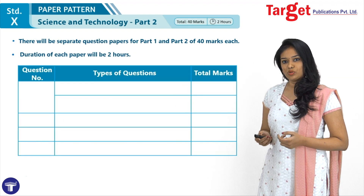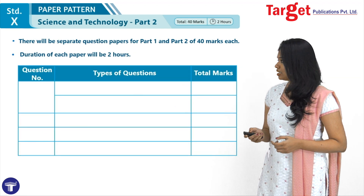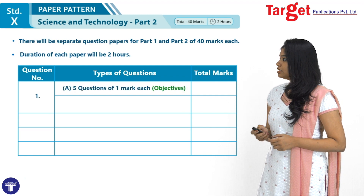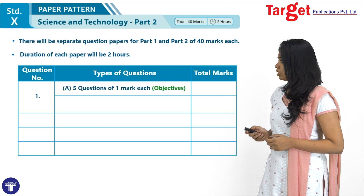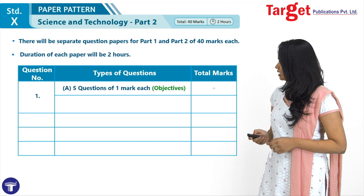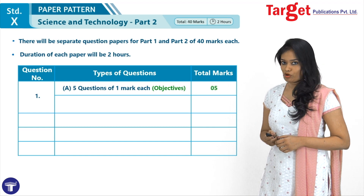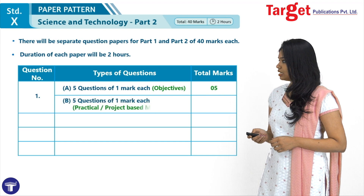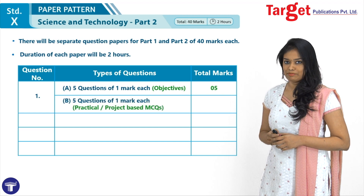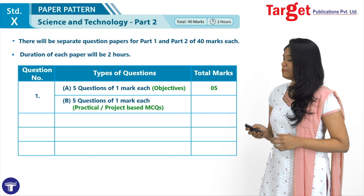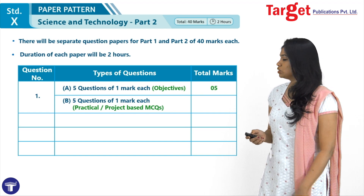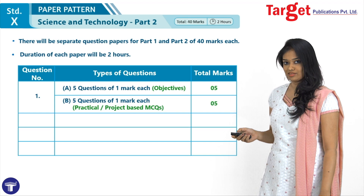Let us go to the question-wise break up of the marks. In the first question, Part A would contain 5 objective type questions of 1 mark each, giving you a total of 5 marks. Part B would be 5 MCQ type questions based on your practicals and projects, again scoring 5 marks.